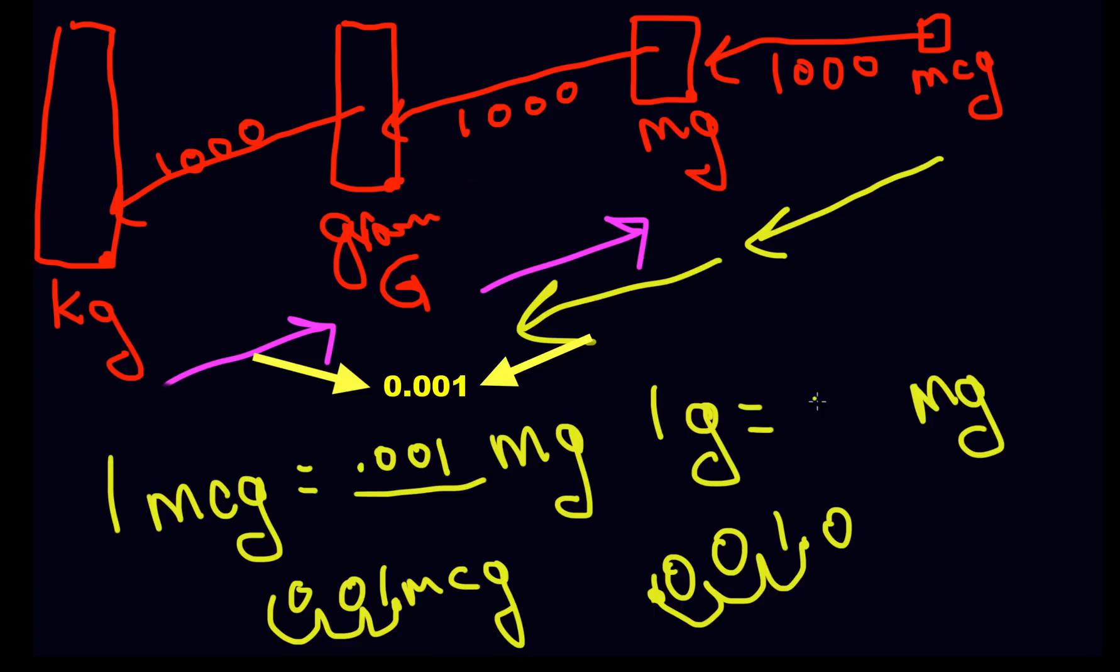And the answer is 0.001. So if you're going from a value that is smaller to something that's higher, bigger, larger, microgram to milligram, you move your decimal point to the left. If you're getting smaller from kilograms to grams, you move your decimal point to the right.